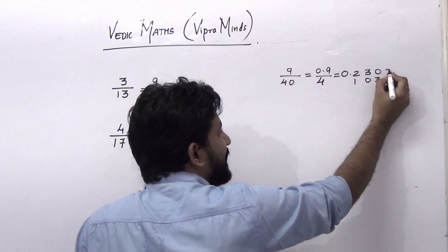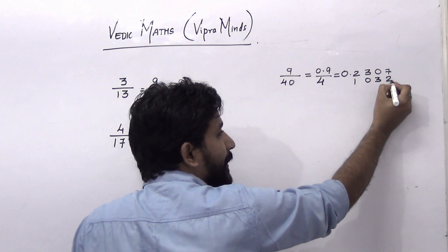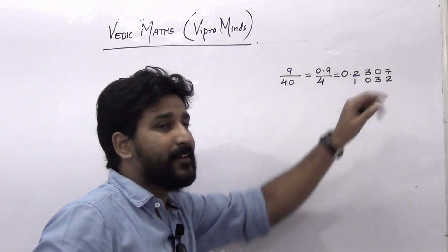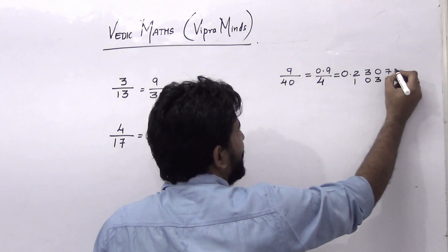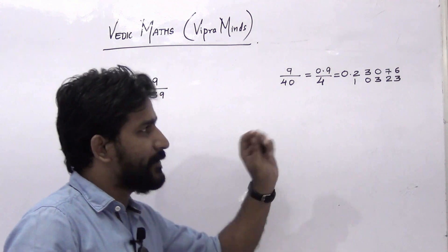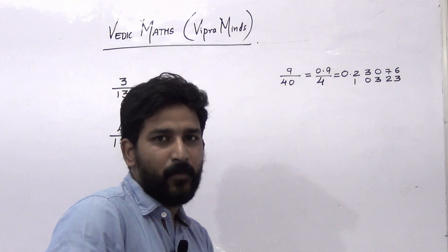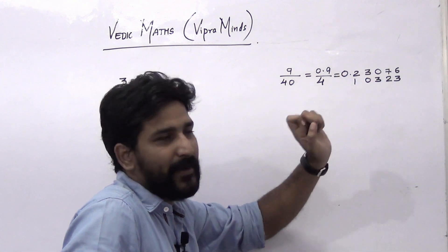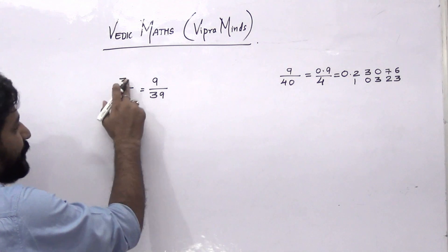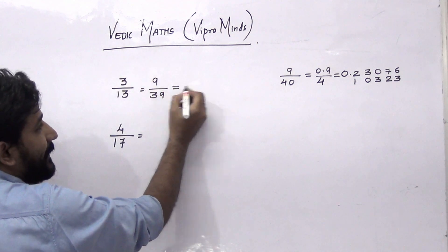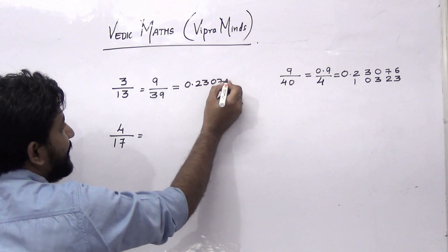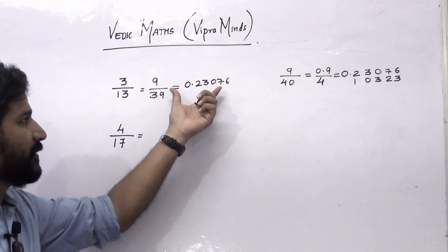The next number to divide by 4 is 30. So 4 into 7 is 28, remainder will be 2. The next number is 27 — 4 into 6 is 24, remainder will be 3, and so on. Just keep on doing the division. So if you have to write up to 4 to 5 decimal places, the answer for 3 divided by 13, which equals 9 by 39, will be 0.23076 and so on.